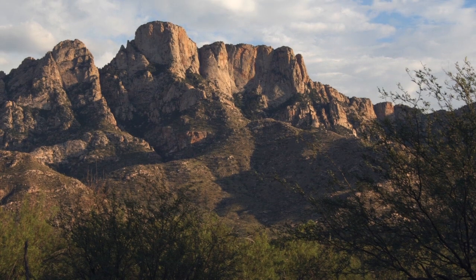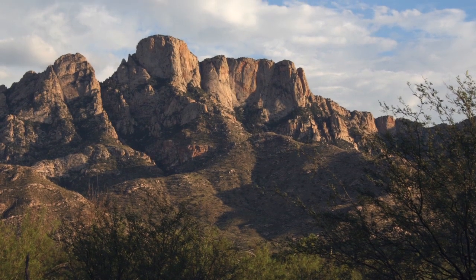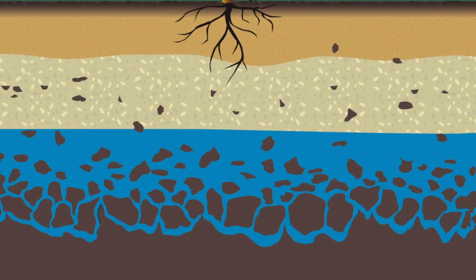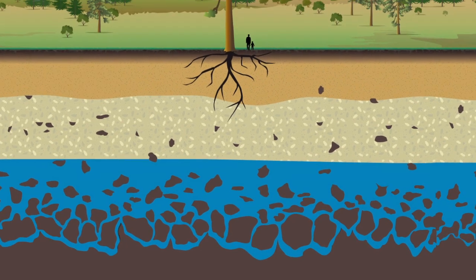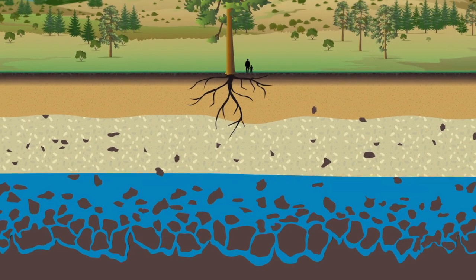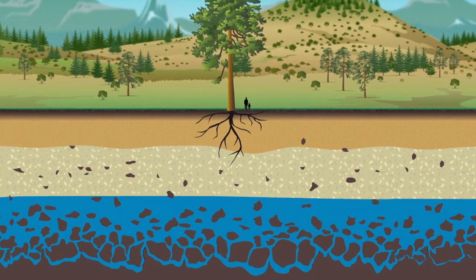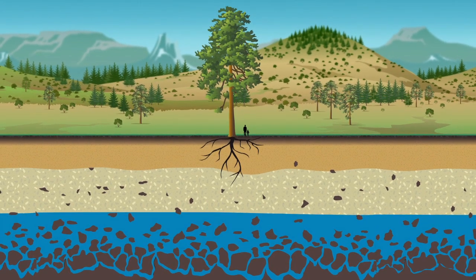Water in the deep critical zone often influences the shape of our landscapes over geologic time. So, even though we can't see the deep critical zone with our eyes, it still has a big influence on our lives here on the surface of the Earth.